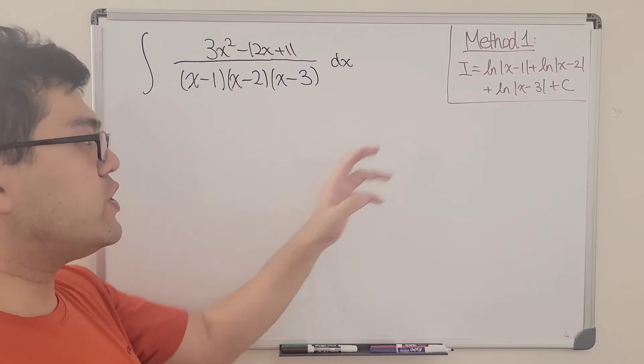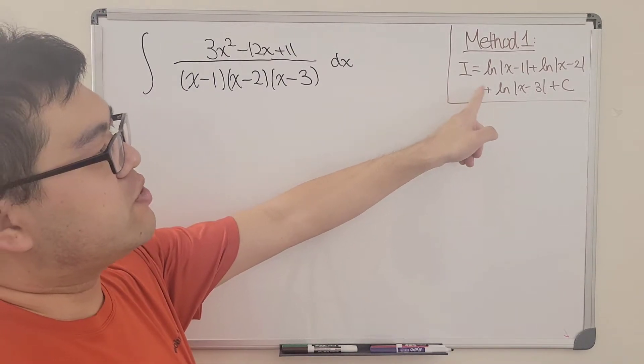And that is it. We get our answer. So we found the integral is equal to ln of x minus 1 plus ln of x minus 2 plus ln of x minus 3 plus some constant c. Great! And that's it for the first method.